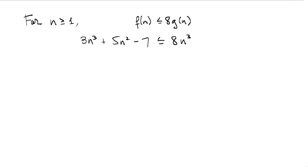It may not be immediately obvious how to prove this inequality, but a good place to start is by looking at the positive coefficients of the terms of each expression. Observe that the sum of the positive coefficients on the left-hand side equals the coefficient 8 on the right-hand side. So we can express 8n³ as the sum of two terms, one with a coefficient of 3 and the other with a coefficient of 5.